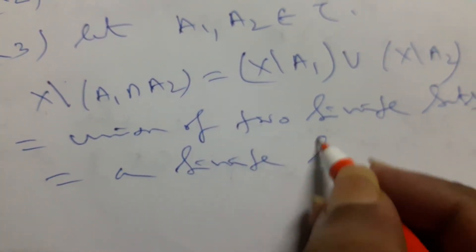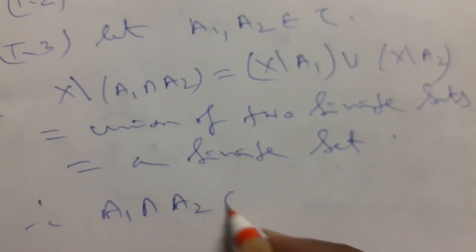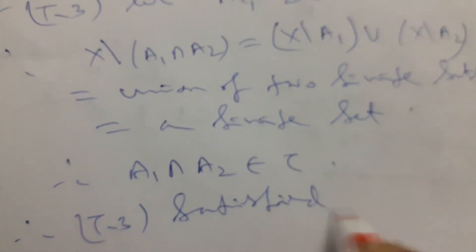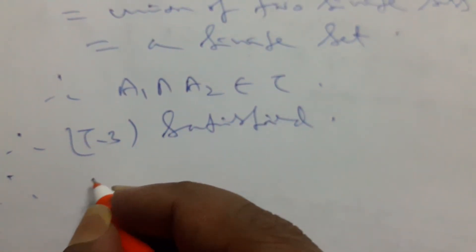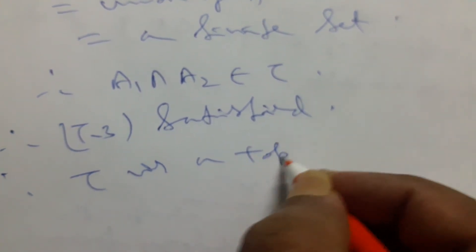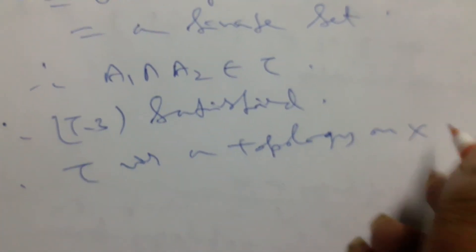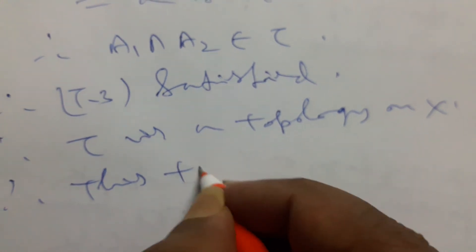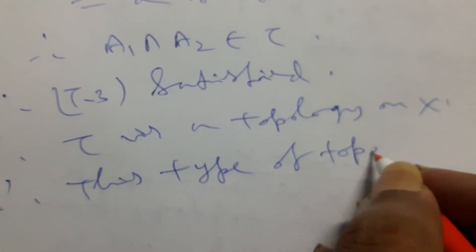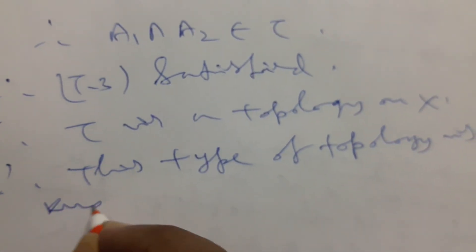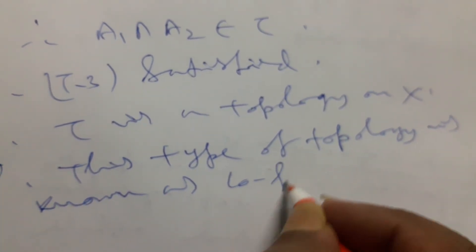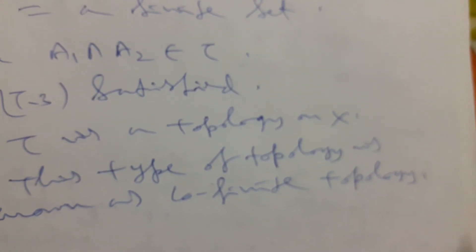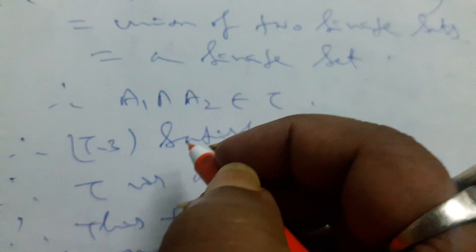Therefore A1 intersection A2 belongs to τ, so T3 is satisfied. Thus τ is a topology on X. So we have given some idea about the cofinite topology. We end our discussion today.